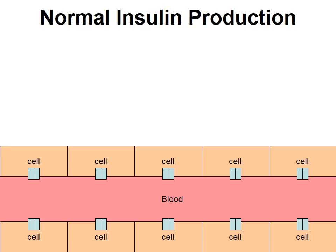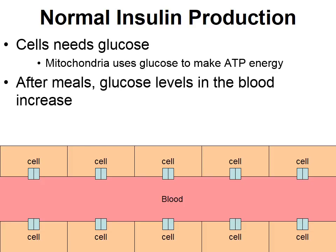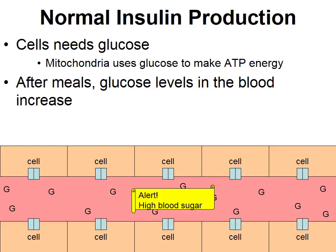Sadly, one of the growing causes of homeostasis disruption today is the disease diabetes. Before discussing diabetes, let's talk about how the process works in a normal, healthy person. Cells need glucose — glucose is the food or fuel that cells take in, and the mitochondria will use the glucose to make ATP, which is an energy molecule. After meals, the amount of glucose begins to rise in our blood, and when blood glucose gets too high, an alert is sent to the brain.